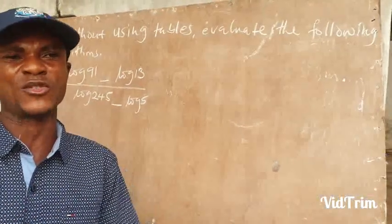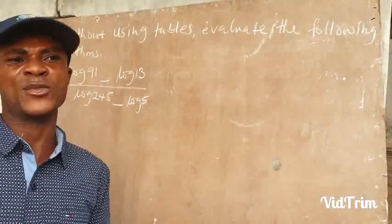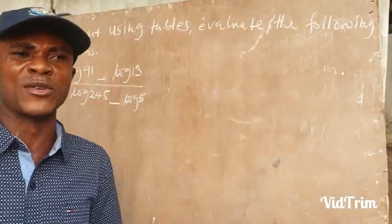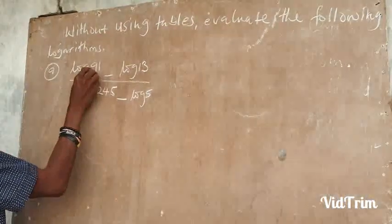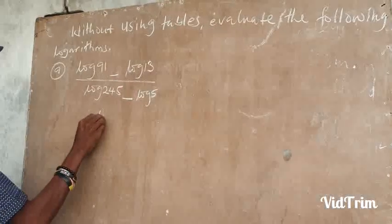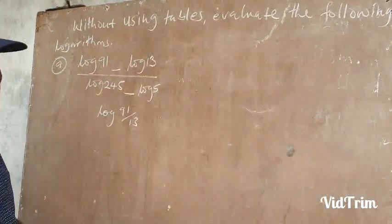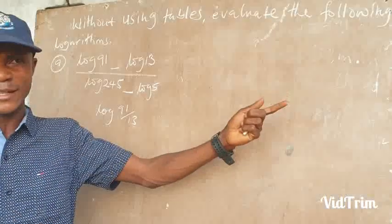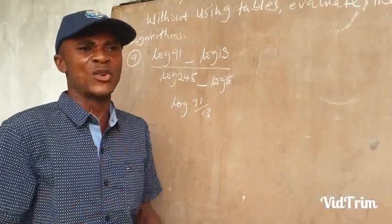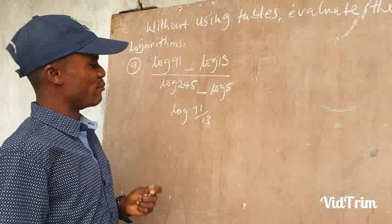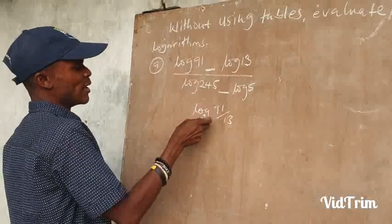Anytime you are using division, you subtract the logs. So if you see subtraction, that means those logs were divided initially. So if that is the case, we have log 91 minus log 13, which simply means log of 91 divided by 13, because of the division you subtract them. The rule is: when it is multiplication, you add; when it is subtraction, you divide; when it appears as division, you subtract.